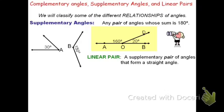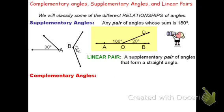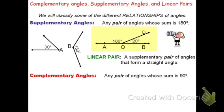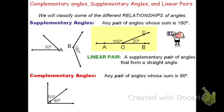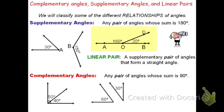Another type of angle relationship are complementary angles. Complementary angles are a pair of angles whose sum is 90 degrees. Again, it must be two angles — not one, not three. A pair of complementary angles would look like this: 50 degrees plus 40 degrees is 90 degrees. You could also split it and have a pair of complementary angles like 60 degrees plus 30 degrees, which is also 90 degrees.